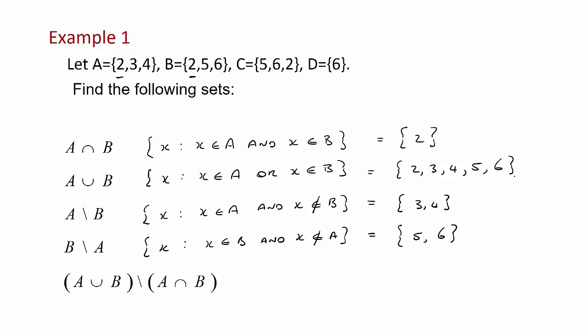Next we have something a little bit more complicated. We want the set that is A or B but not A and B. Here we have A or B but not A and B which was 2. So what we're left with is 3, 4, 5 and 6.